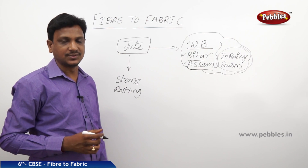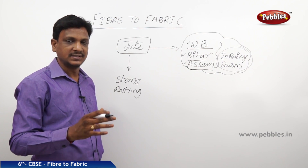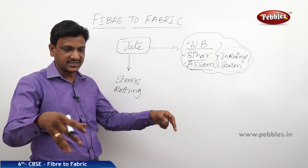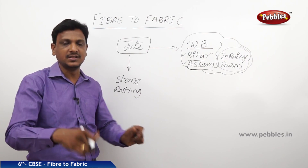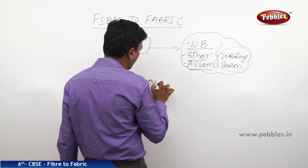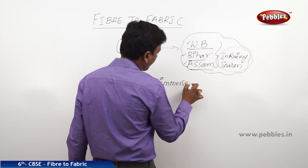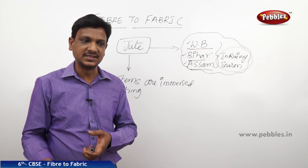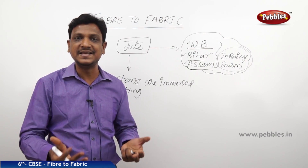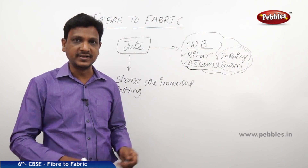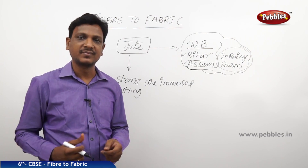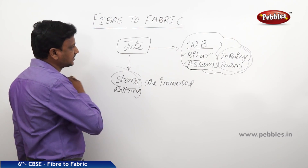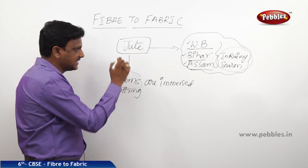Once the jute plants are grown and harvested — that means the plants are cut — the stems are rotted in stagnant water. They are immersed in the water and they become rotten. When they are rotten, they are taken out, crushed, and beaten hard to extract the fibers from the stems. So jute fibers are extracted from the stems.